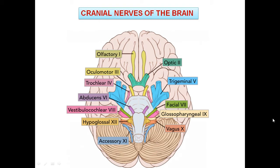Let us see the cranial nerves of the brain. The entire brain consists of twelve cranial nerves, and ten cranial nerves arise from the brainstem. The oculomotor nerve and trochlear nerve come from the midbrain. The trigeminal nerve, facial nerve, abducent nerve, and vestibulocochlear nerve come from the pons and pontomedullary junction. Today's topic is based on the oculomotor nerve, trochlear nerve, and abducent nerve.